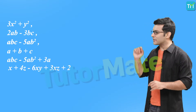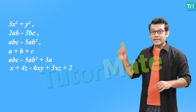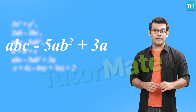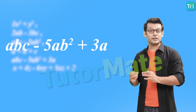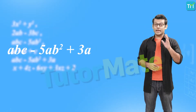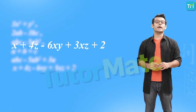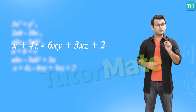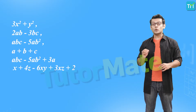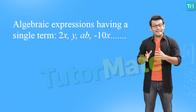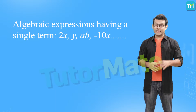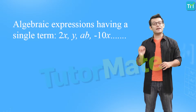Now take a look at these expressions. The first one is a plus b plus c and it has three terms. At the same time, abc minus 5ab square plus 3a is again an algebraic expression having three terms. And then we have x plus 4z minus 6xy plus 3xz plus 2, which is an algebraic expression having a total of five terms. Also, terms like 2xy, ab, minus 10x and so on are algebraic expressions having a single term.